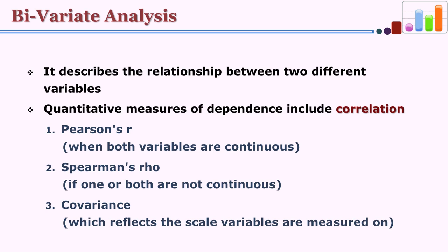Under correlation we can have different types. Generally used are Pearson's r when both variables are continuous, Spearman's rho when one or both are not continuous, and the third one is covariance, which is useful in analysis of covariance. This reflects the scale variables are measured on. Now let us see each one of these in detail.